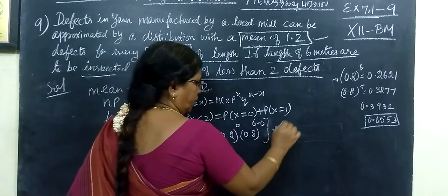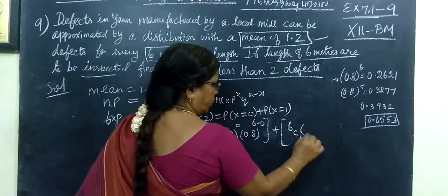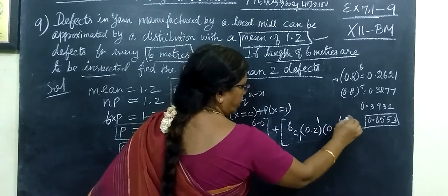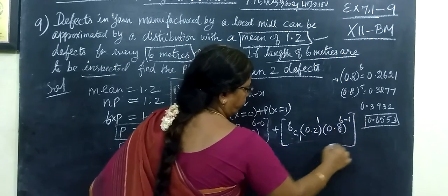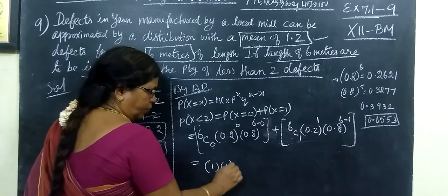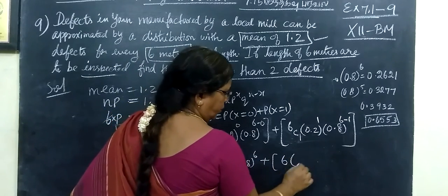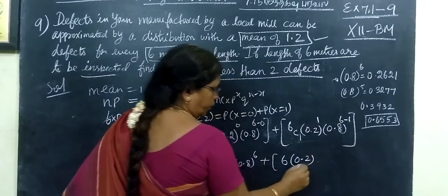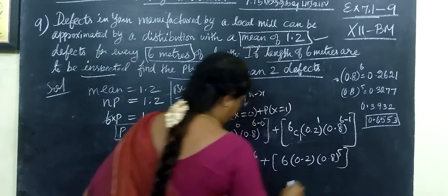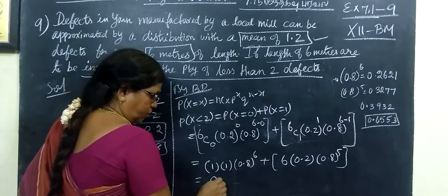Then plus nCx, p power x, q power n minus x. 6C0 is 1, anything power 0 is 1, so 0.8 whole power 6, then plus 6C1, then 0.2, then 0.8 power 5.